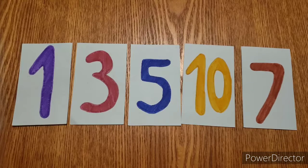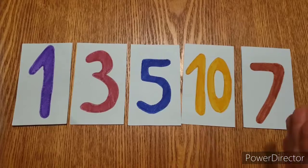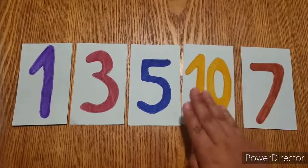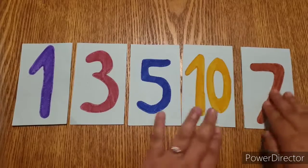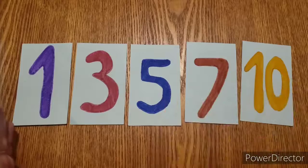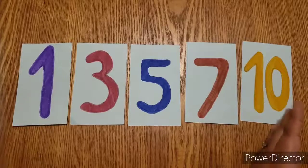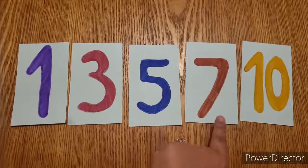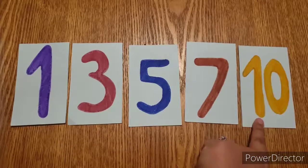What do you think would go after 5? Is it 10 or 7? It would be 7 because 10 is greater than 7. So this is what the order would be from least to greatest. We have 1, 3, 5, 7, and 10.